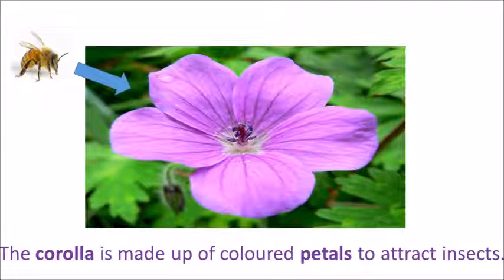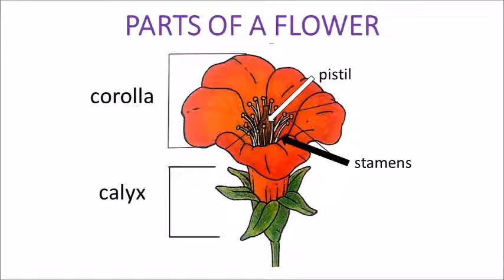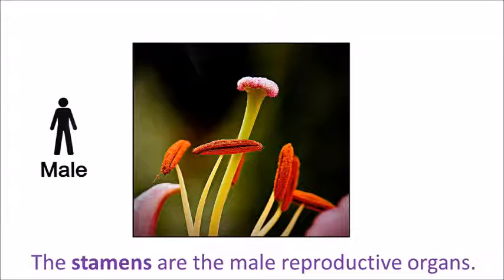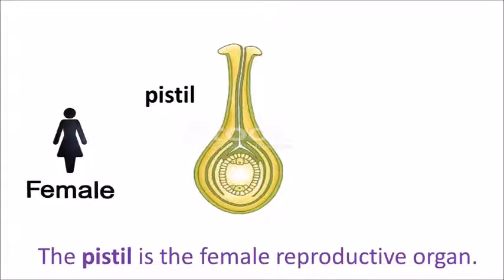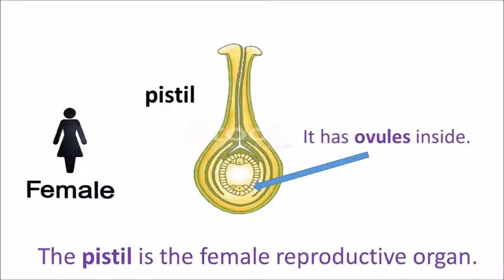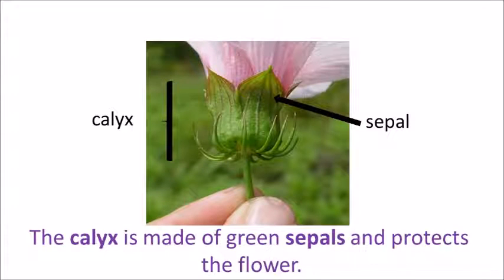The corolla is made up of coloured petals to attract insects. In the corolla we can see the pistil and the stamens. The stamens are the male reproductive organs — they produce pollen. The pistil is the female reproductive organ and it has ovules inside. The calyx is made up of green sepals and protects the flower.